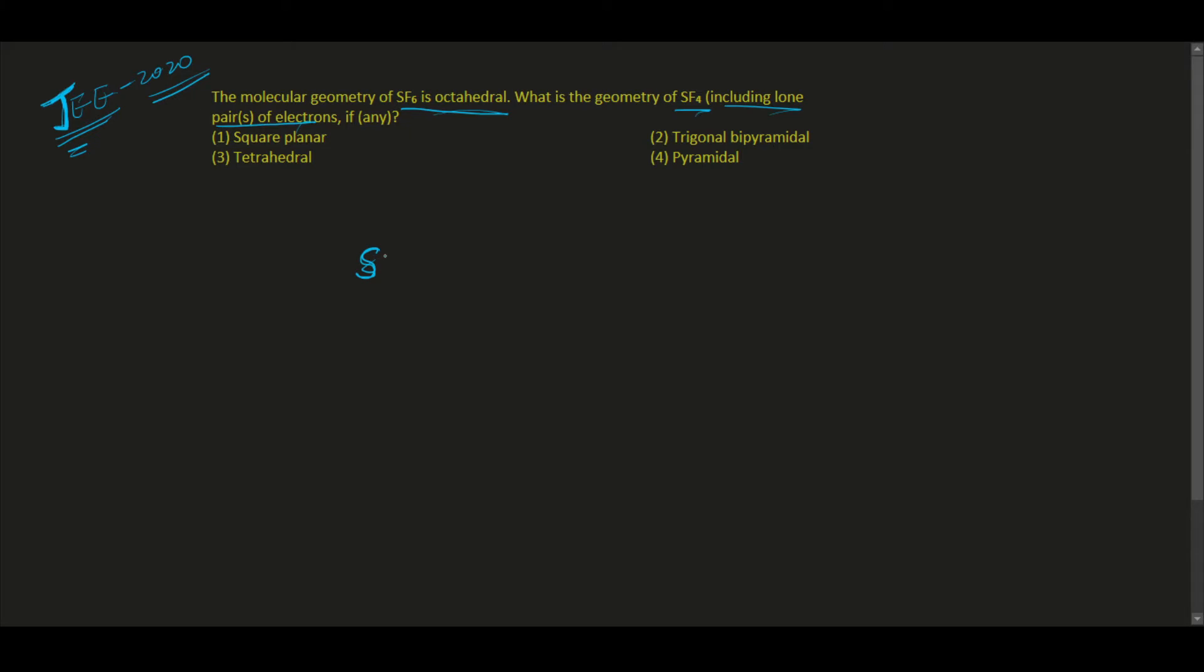Sulfur has how much? That is six. So this will be like this: one, two, three, four, and five, six. So sulfur has six outermost electrons. And for SF4, we have to...